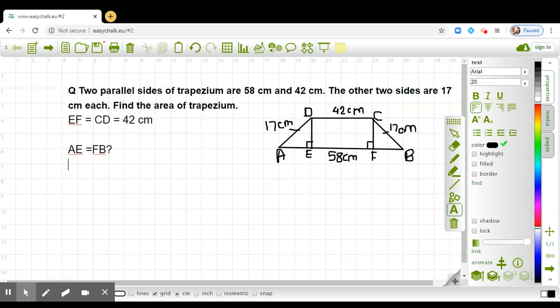If you consider right triangle DEA and right triangle CFB, both are congruent to each other. You know why? We can use RHS criterion.